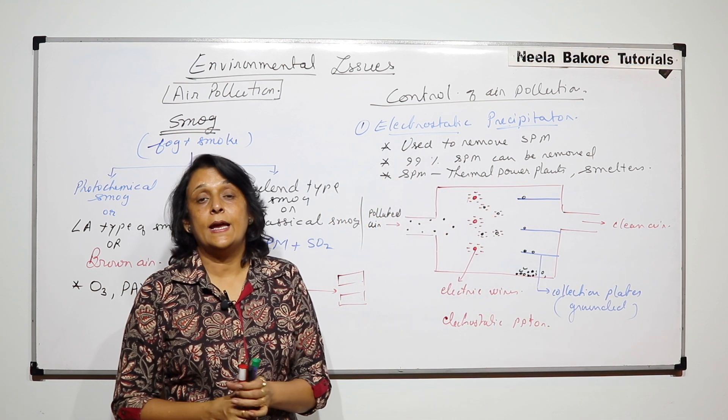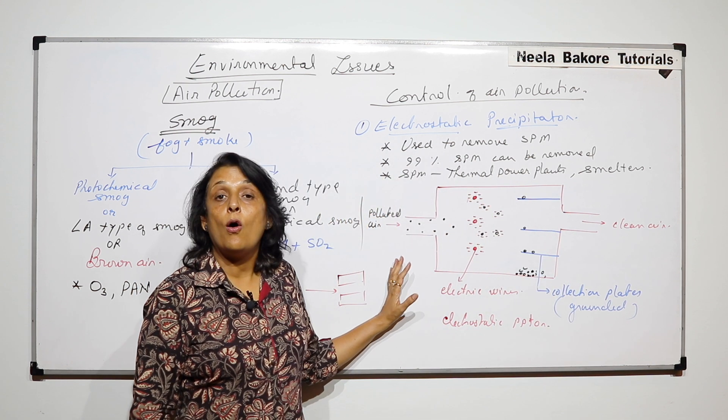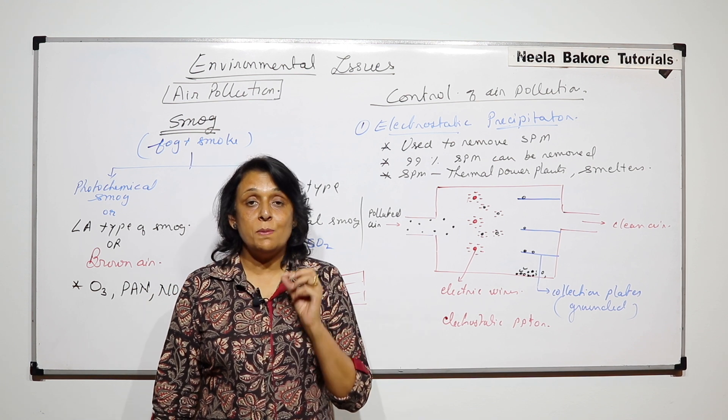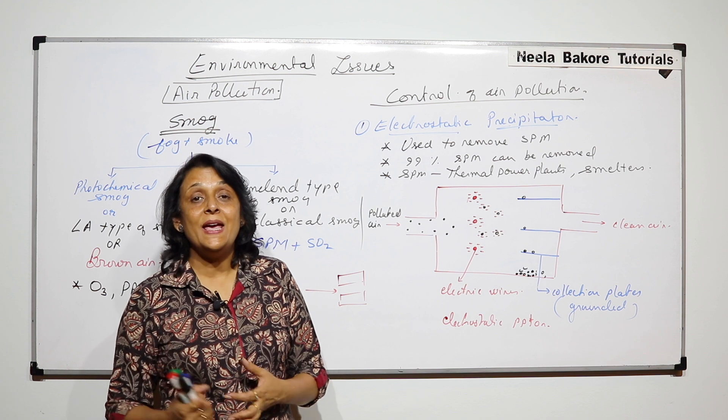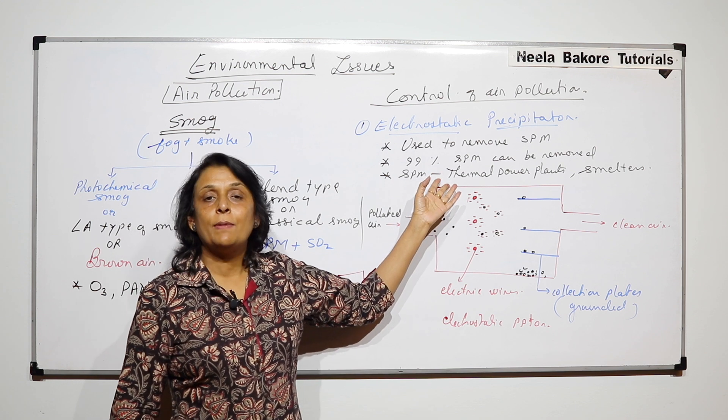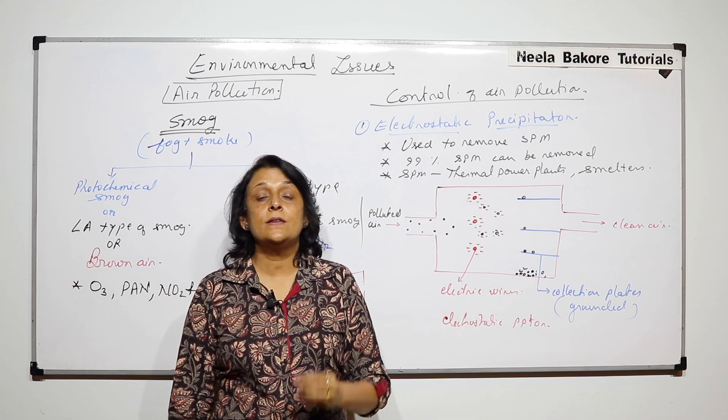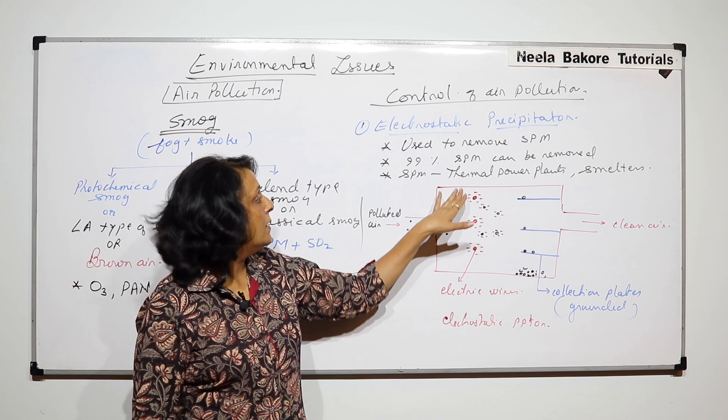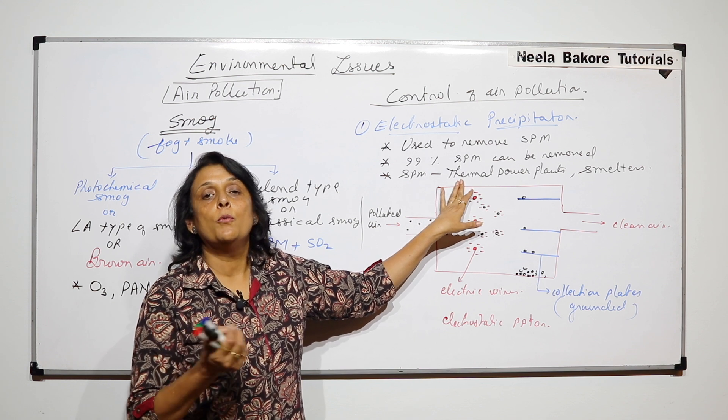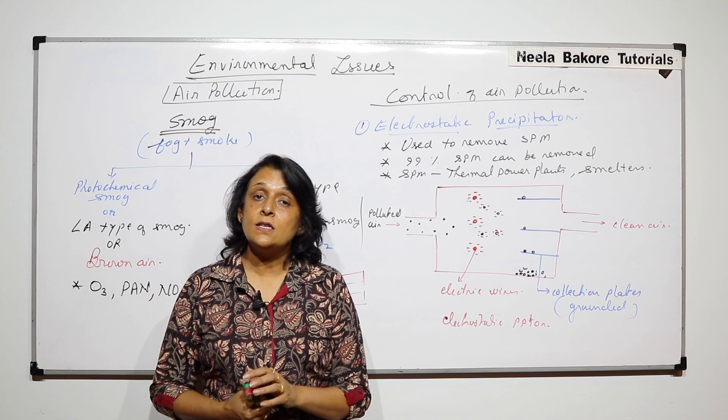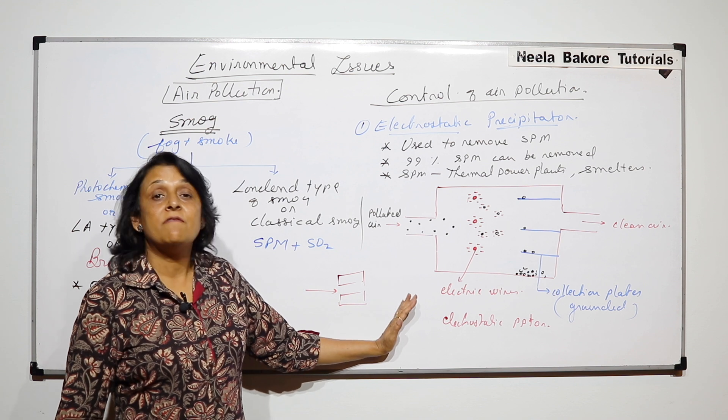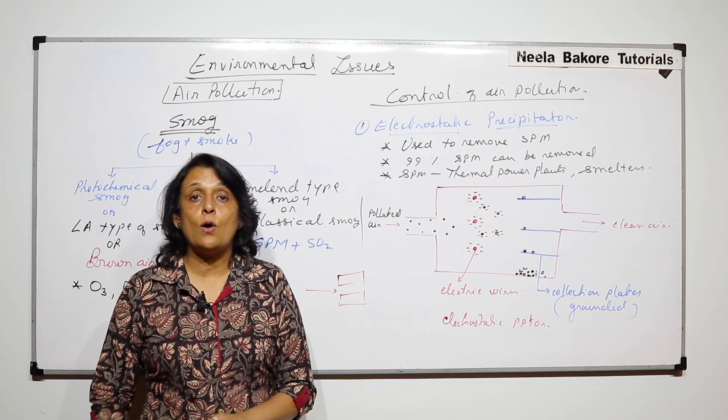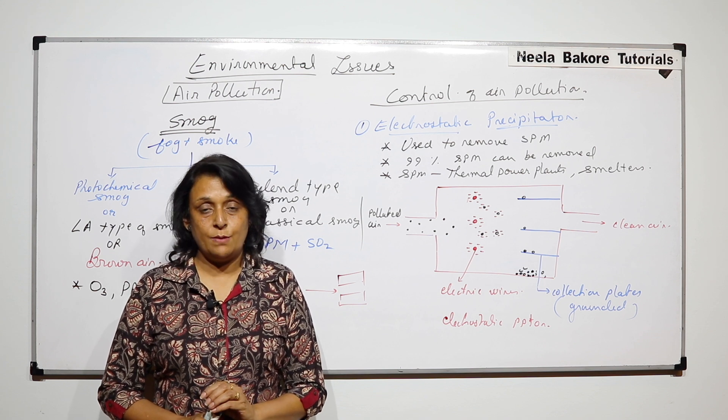Now as I said, the size of this electrostatic precipitator will depend on how big the thermal power plant is or the smelter is, and the location would also be decided on the basis of the point from where this pollution is released. But it is a very effective method to remove or to get rid of suspended particulate matter.